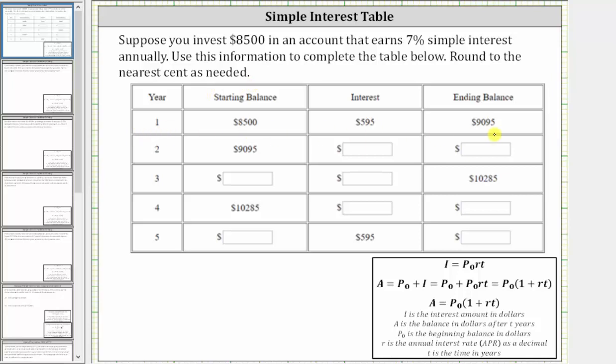Notice how the first row is given for us, where the starting balance is $8,500, the simple interest for the first year is $595, and the ending balance is $9,095, which is the sum of 8,500 and 595.